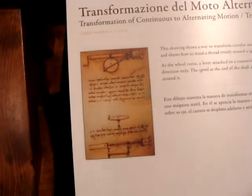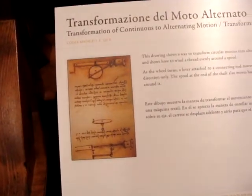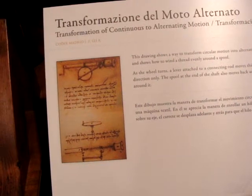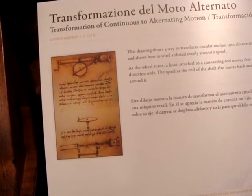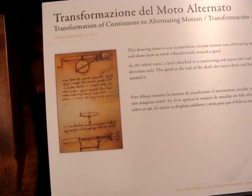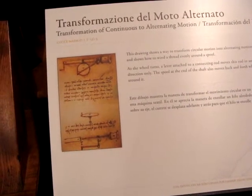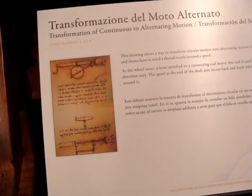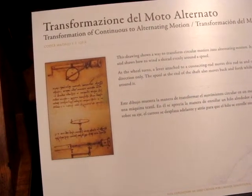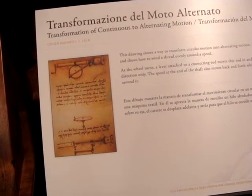Part of the design for a textile machine shows how to wind the thread evenly around the spool. As the wheel turns, the lever attached to a connecting rod moves its rod in and out of the shaft, turning the shaft in one direction only. The spool at the end of the shaft also moves back and forth while rotating, so the thread can be wound evenly around it.